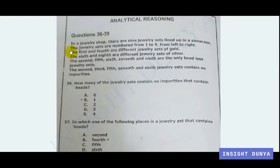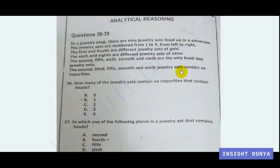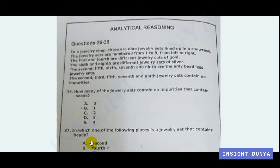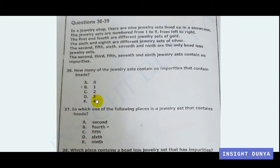The next part is the analytical reasoning section, question numbers 36 to 39. In a jewelry shop there are nine jewelry sets lined up in a showcase, numbered from one to nine left to right. The conditions are: sets one and four are different gold sets; sets six and eight are different silver sets; sets two, five, six, seven, and nine are the only beadless sets; and sets two, three, five, seven, and nine contain no impurities. For analytical reasoning questions, we write the question in symbolic form.